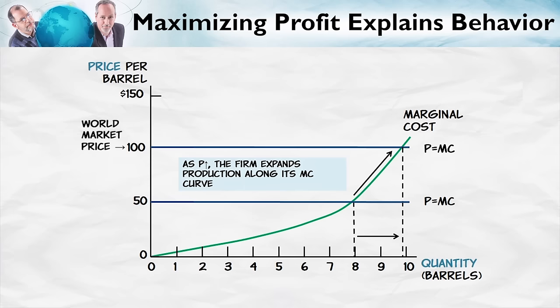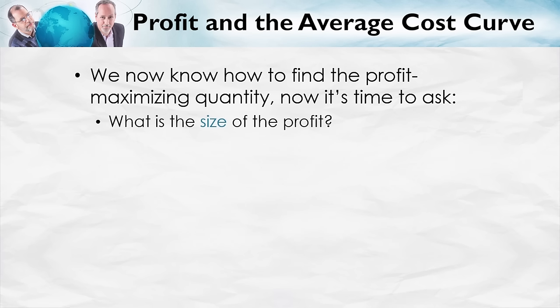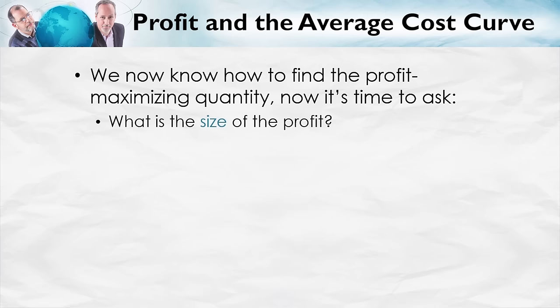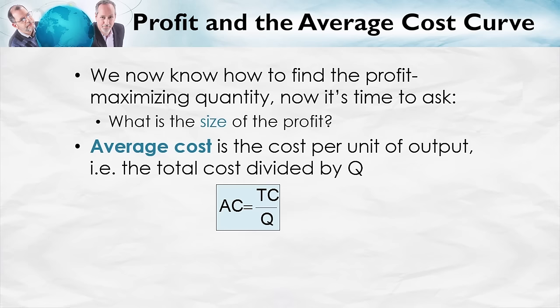We now know how to find the profit-maximizing quantity: look for the quantity where marginal revenue equals marginal cost, which for a competitive firm means where price equals marginal cost. Next, we want to ask what the size of the profit is. Notably, you can be maximizing profits and still have a loss — the best you can do might be a loss. To show profit or loss on the diagram, we need to introduce average cost, which is simply total cost divided by quantity Q. Adding the average cost curve to our graph will let us show profit, and that's what we'll do in the next talk.